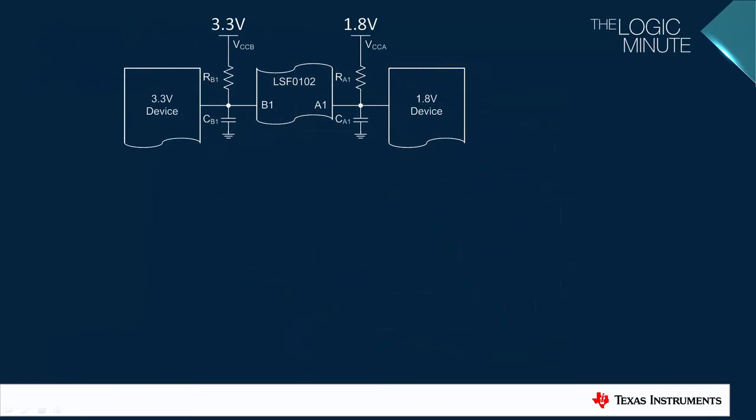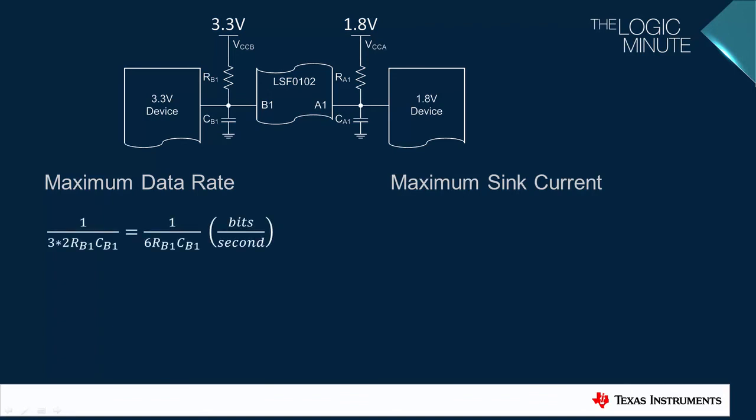In any up-translation circuit with the LSF, you have to balance two important factors: maximum data rate and maximum sink current. The maximum data rate is directly related to the slow rising edge we just saw on the previous slide. A pulse that's three times the width of the rising edge is a good minimum to set, so this equation finds the bitrate for that pulse width.